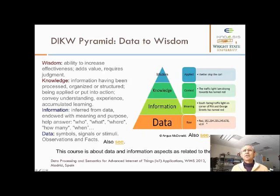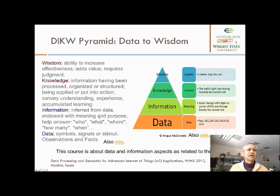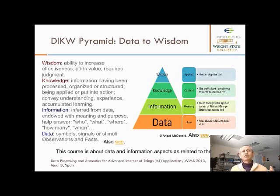For example, raw data captured by a video recorder looking at traffic — the information, the meaning of that data, could be that the southbound traffic light on the corner of Pit and Jaw Street turned red. That is information: something you infer from the data. It gives meaning and purpose to help answer questions like who, what, where, how many, when. Once you have this information you can use data in a much more meaningful way.